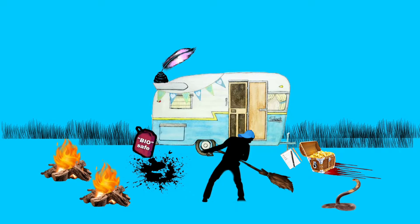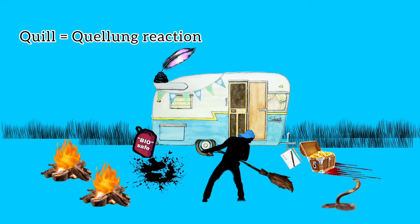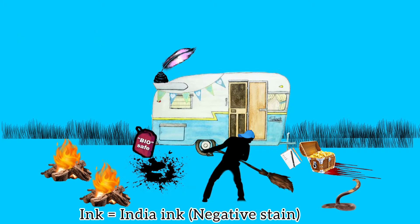The large pink quill on the top of the van and the ink spilled on the ground represent two very important reactions which demonstrate the capsule of the bacteria. The large quill represents the quellung reaction, and the dark colored ink spilled on the ground is India ink, which is a negative stain.